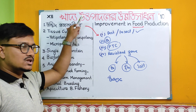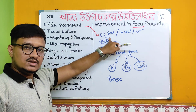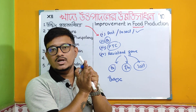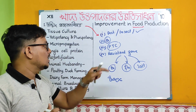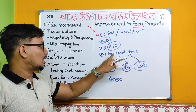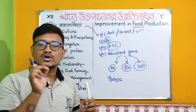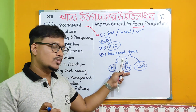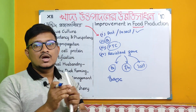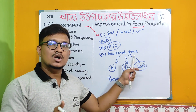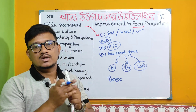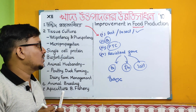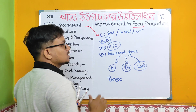In the breeding system, different methods like hybridization are used. Plant tissue culture and resistance are important — resistance to drought, high salt concentration, and other stresses. Gene applications in the field of food production improvement are very significant.